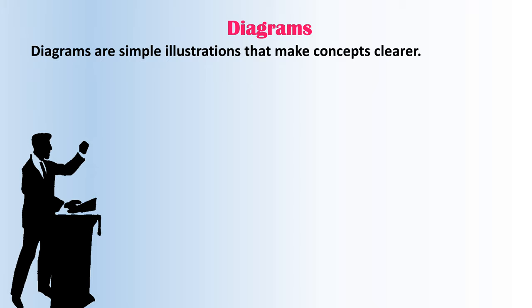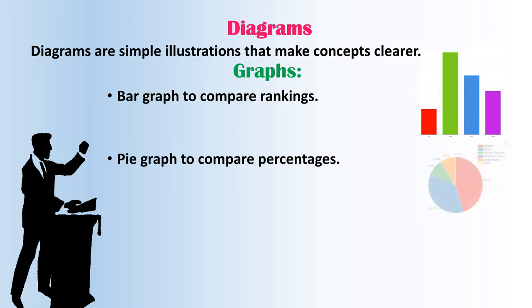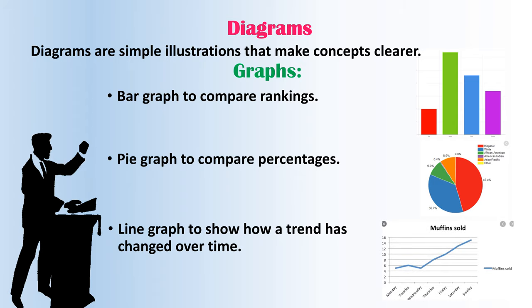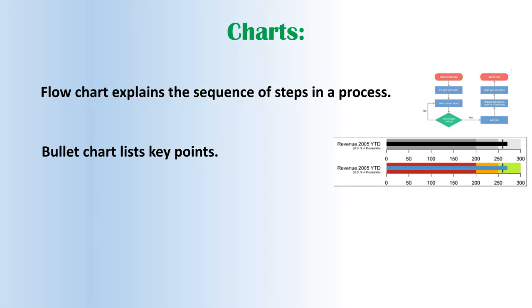Diagrams are simple illustrations that make concepts clearer and more vivid. There are different kinds of graphs: bar graphs are used to compare rankings, pie graphs are used to compare percentages, and line graphs show how a trend changes over time. For charts: a flow chart explains the sequence of steps in a process, and a bullet chart lists key points.